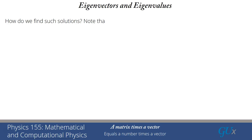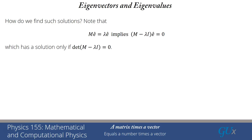How do we find such solutions? Note that M times a vector equals a number times a vector implies that (M minus lambda times the unit matrix) acting on vector Ê equals zero. We get that simply by subtracting the right-hand side from the left-hand side and noting that I times Ê is the same as Ê. Now, going back to row reduction: when we had a matrix equation equal to zero, we got a non-trivial solution only when the determinant of the matrix was equal to zero.